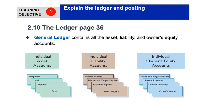As you can see in this slide, we have a ledger for cash, a ledger for supplies, a ledger for land, a ledger for equipment, a ledger for notes payable, a ledger for owner's drawings, and so on. Let's take an example of one of these accounts.